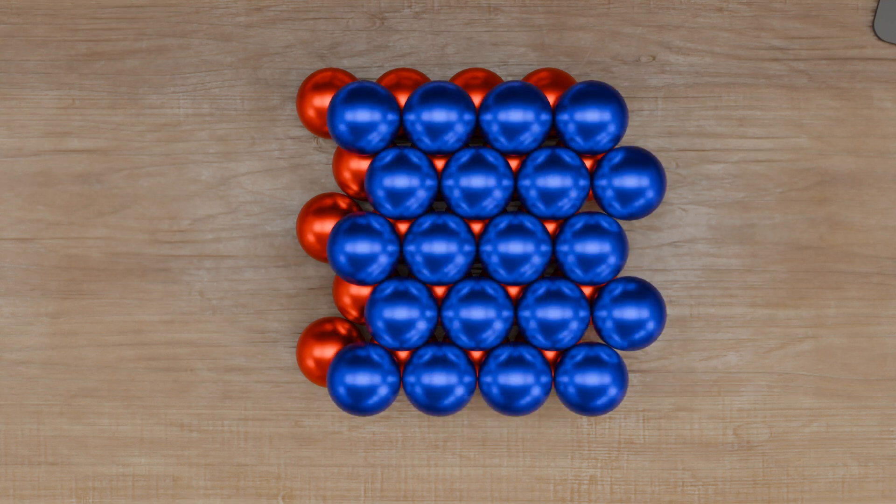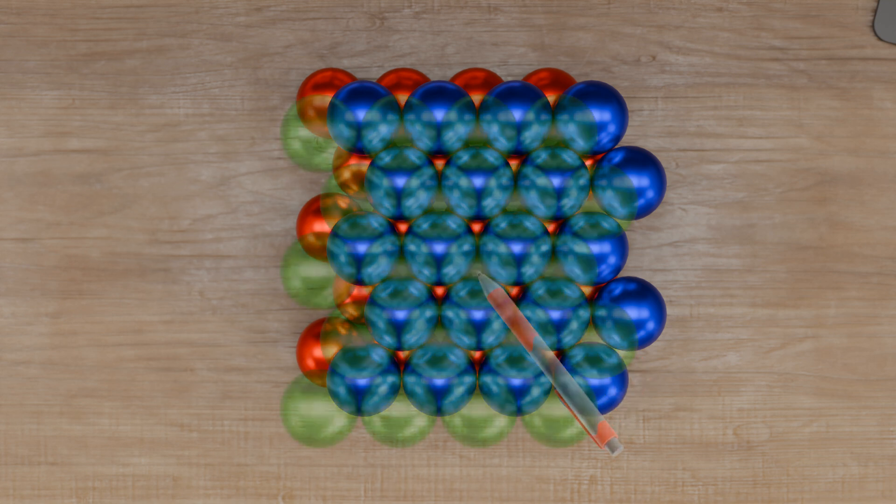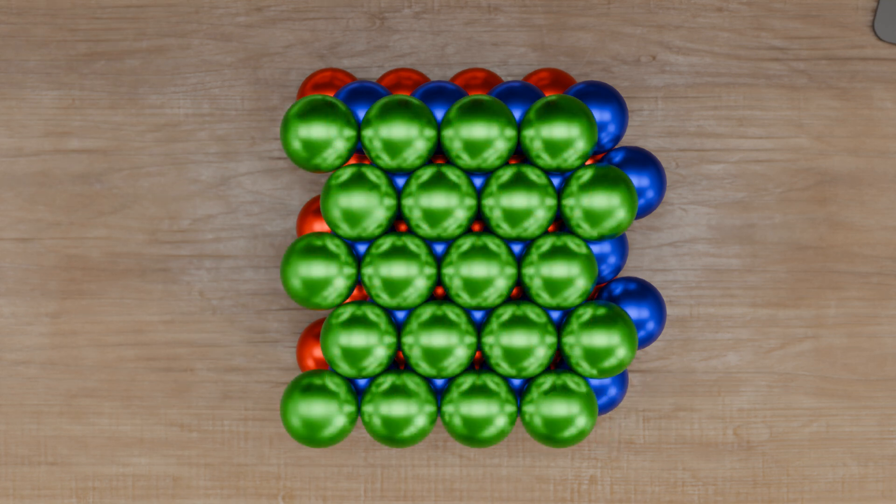Initially, the second layer is still stacked as in the hexagonal closest packed lattice, sitting in the gaps of the underlying layer. However, the third layer is no longer identical to the first layer as in the hexagonal lattice, but is located in the free gaps through which it was still possible to see in the hexagonal lattice. In this way, the stacking sequence of the most densely packed layers results in the series ABC.